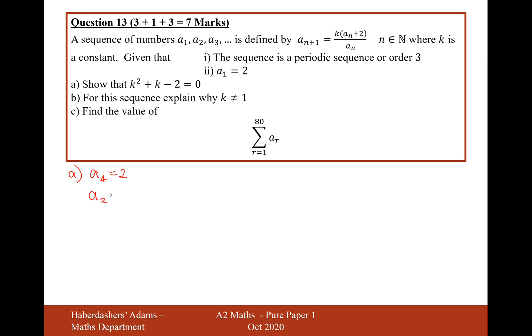So let's work out what a2 is going to equal. It's going to equal k times 2 plus 2 over 2, so that's going to equal 2k. Let's move on to a3. a3 is going to equal k times 2k plus 2 over 2k, and that's going to equal, cancel out k here and here, cancel out 2 here and here, and that will now just be k + 1.